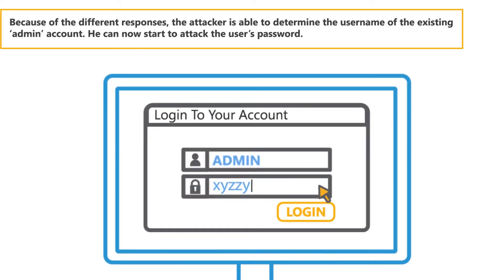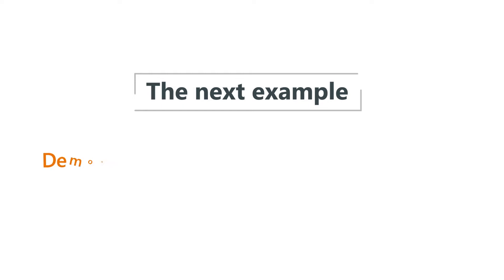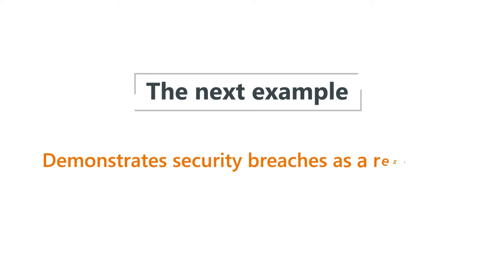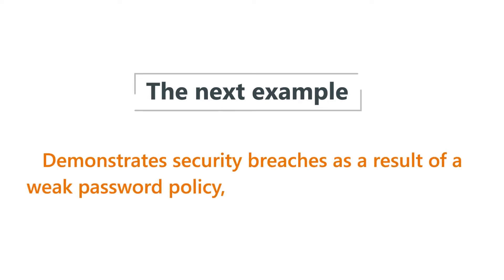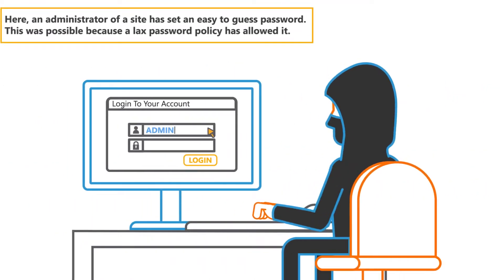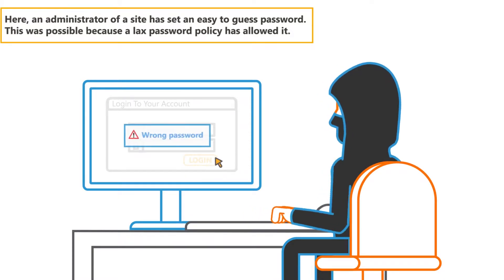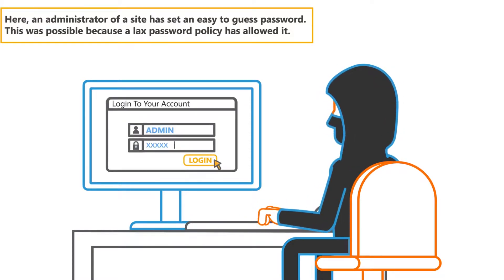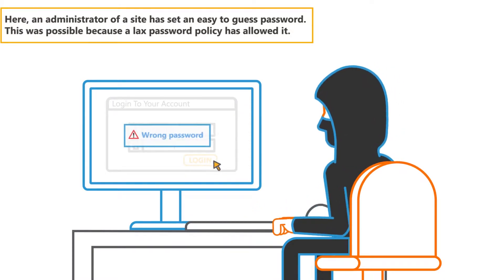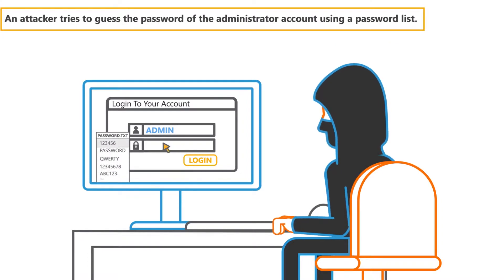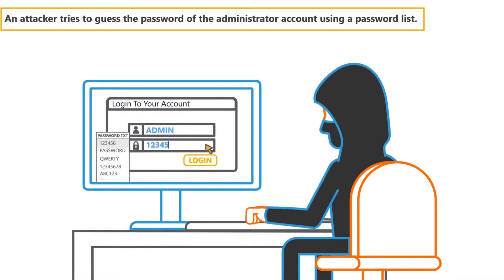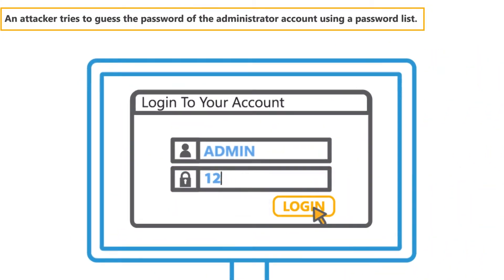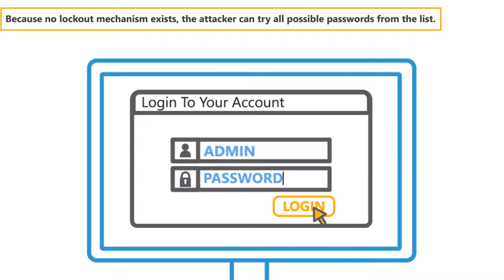The next example demonstrates security breaches as a result of a weak password policy and no lockout mechanism. Here, an administrator of a site has set an easy-to-guess password. This was possible because a lax password policy has allowed it. An attacker tries to guess the password of the administrator account using a password list. Because no lockout mechanism exists,